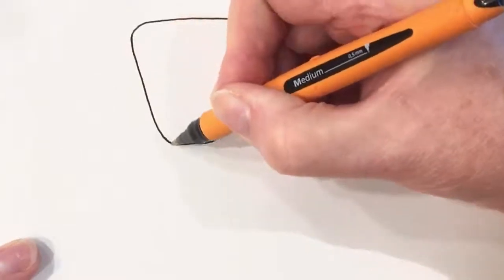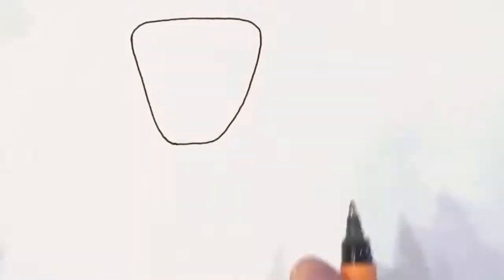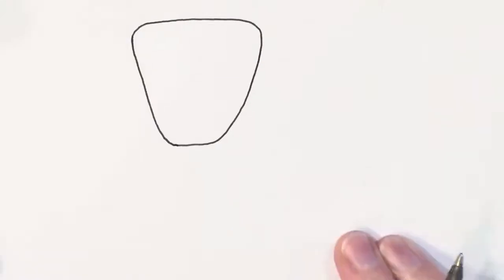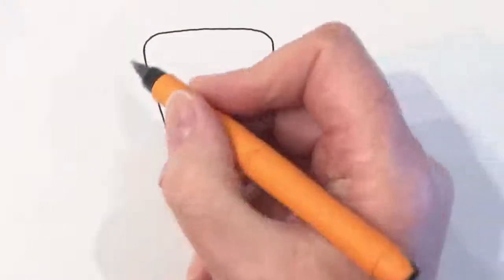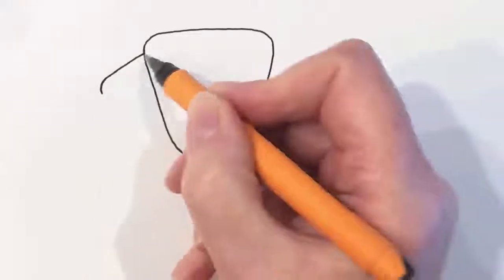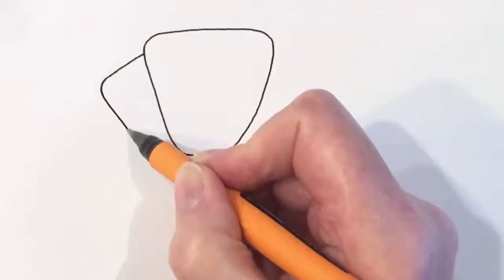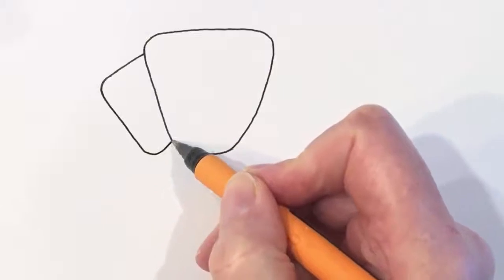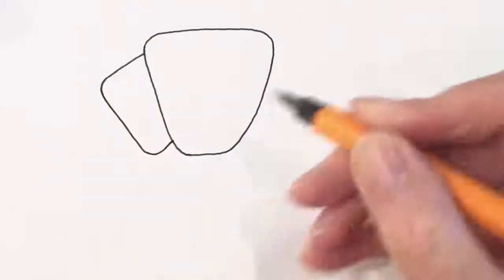So there's the center of our croissant and then we're going to draw little bits that come off the side. They're going to be bigger across here and then a bit smaller down here so that they're going to curve around.